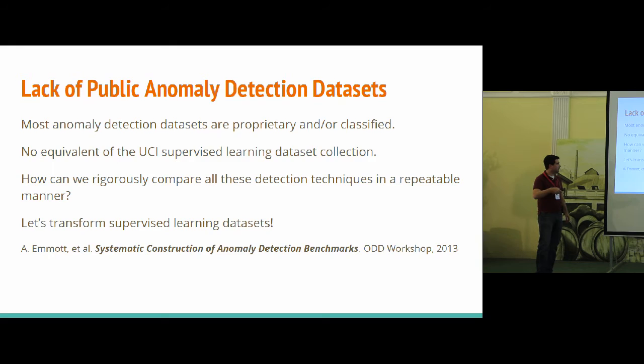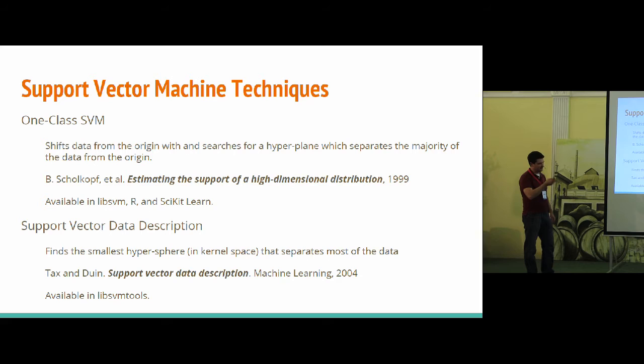So that led to some work of let's try to take some of the really nice public data sets for supervised learning that UCI maintains, and let's transform them into something we can use for anomaly detection. And before I get deeper into that, though, I wanted to do a super quick review of some of these anomaly detection algorithms.